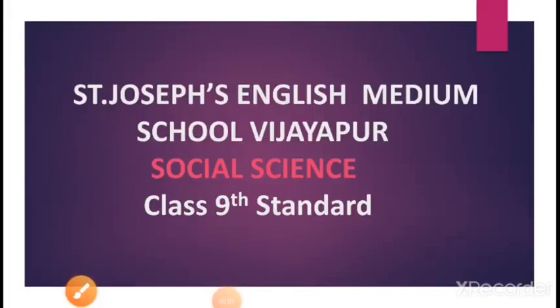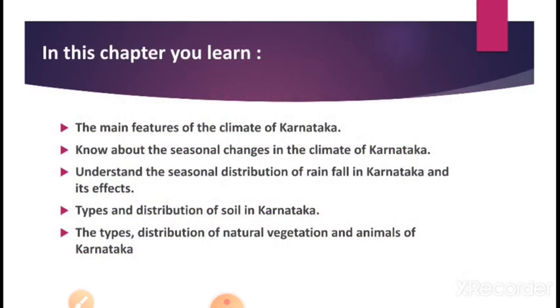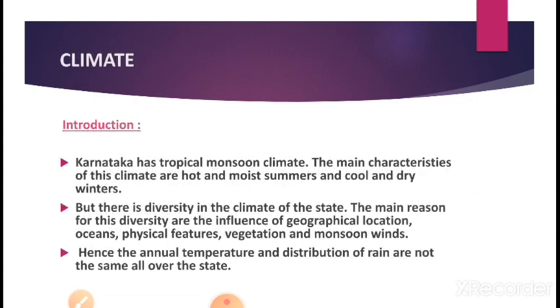Good morning to all. Today we are going to study the third lesson of the Geographic Part: Climate, Soil, Natural Vegetation and Animals of Karnataka. In this chapter we will learn about climate, variety of climates in the state, reasons for diversity in climate, soil types and formation, meaning of natural vegetation, types of natural vegetation, and the Animal Resource of Karnataka. Let me explain the first topic: Climate.